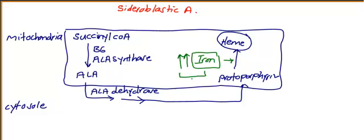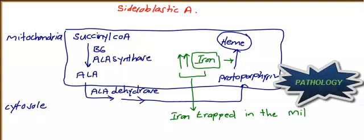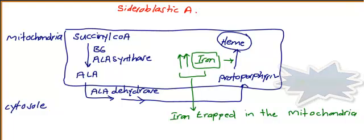...trapped into the mitochondria. This is the pathophysiology or the pathology. If iron is trapped in the mitochondria, that means sideroblastic anemia.